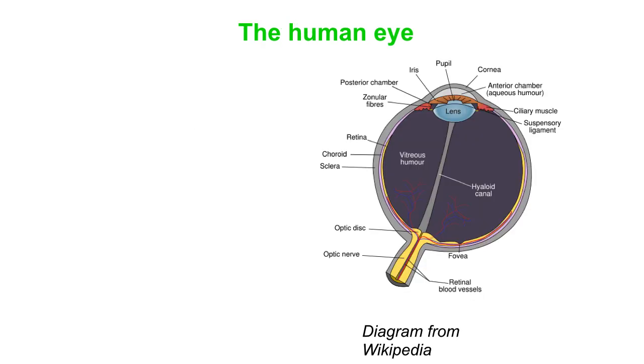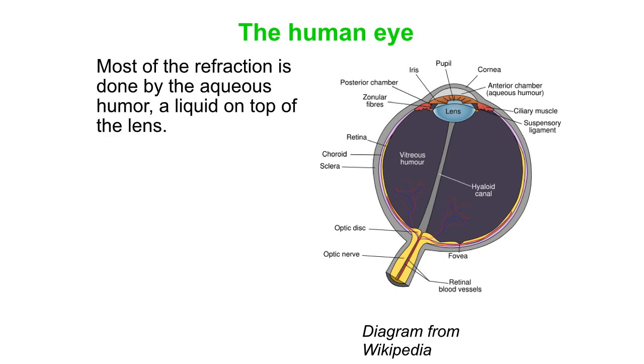Now the human eye, what happens here is that light comes in from the air and enters the eye. And we might think that the lens does all the focusing but most of the refraction happens when there is the largest change of index of refraction. That happens when the light goes from the air into the eye in the first place. So most of that is done by the aqueous humor, which is on top of the lens.